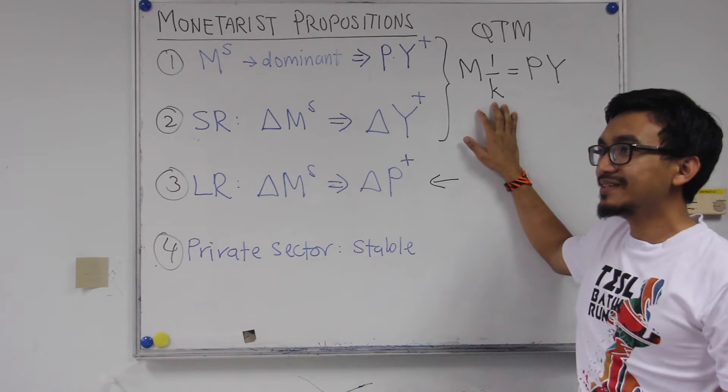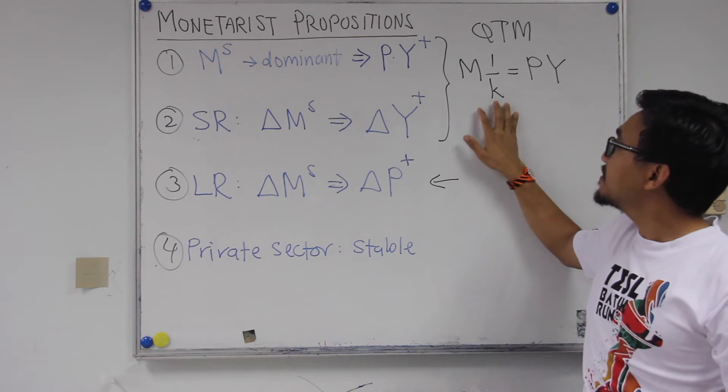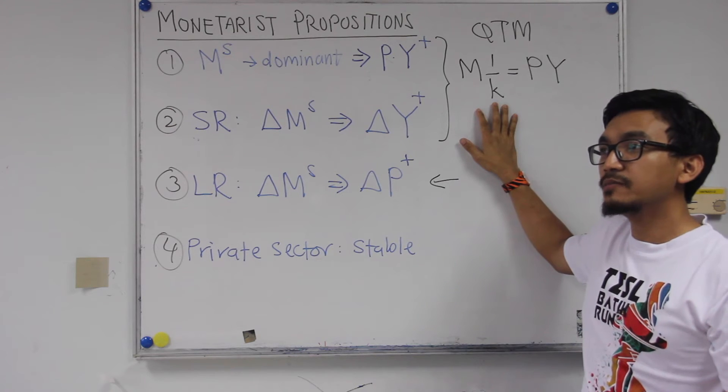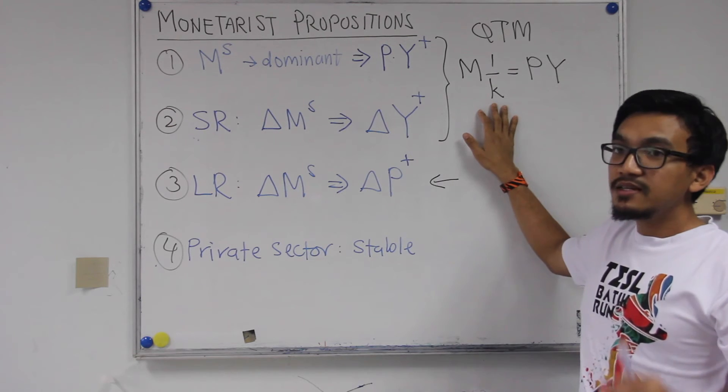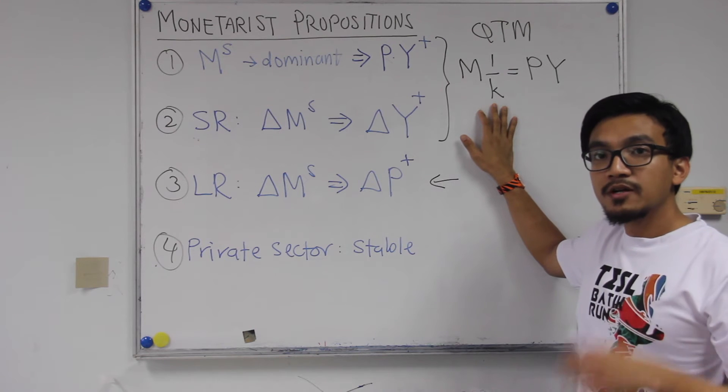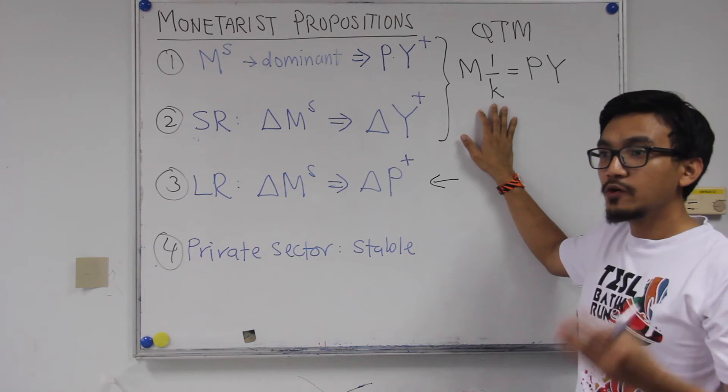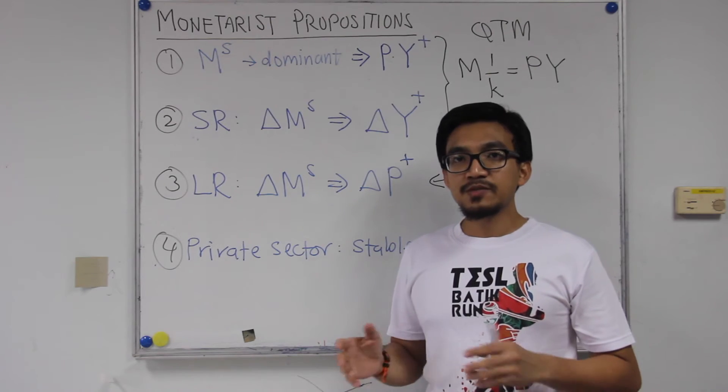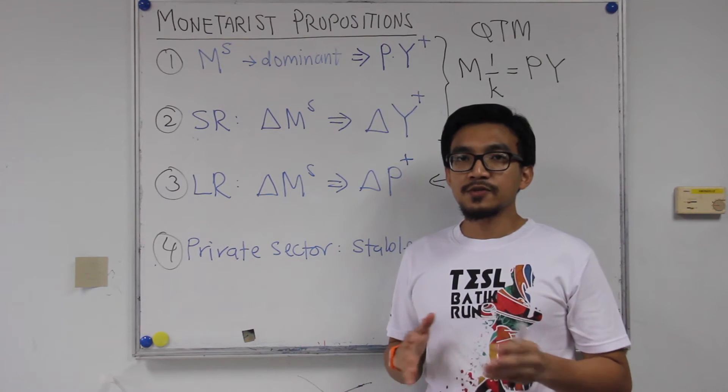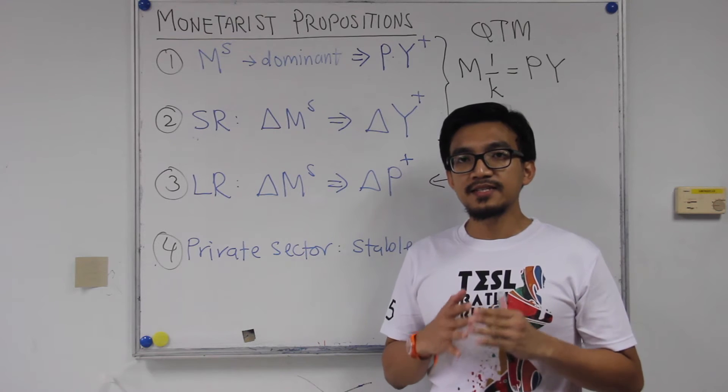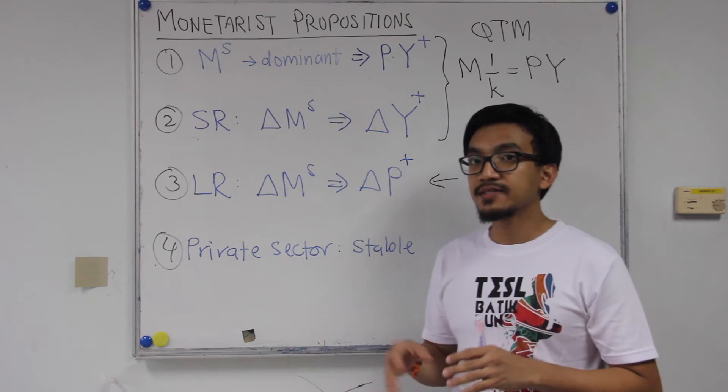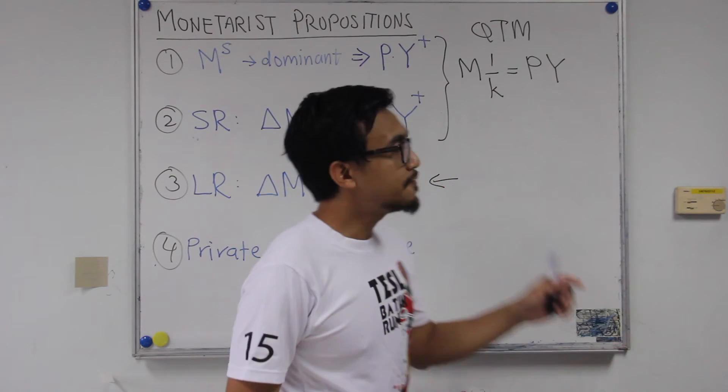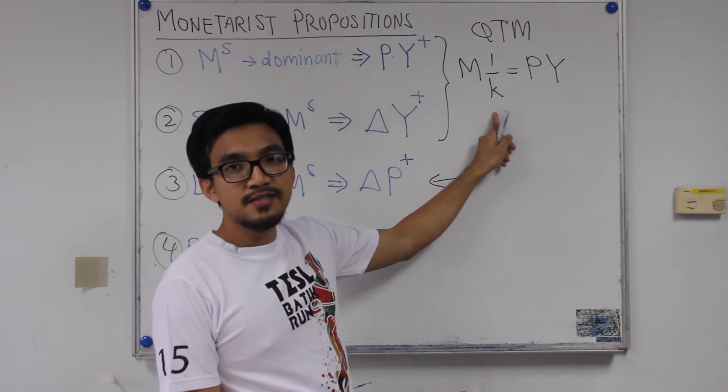So as you notice, this will be the money supply, the money variable. And this P multiplied with Y, price multiplied with real income will give us the nominal income. So the differences basically, just to simplify the discussion, is with regard to the behavior of K. So it can be summarized into how they have a different way of explaining the behavior of K in this equation.